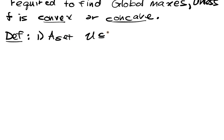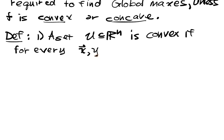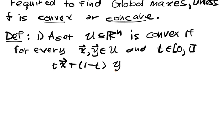So a set u subset of R^n is convex if for every pair x and y in your set and every t in [0, 1], t times x plus (1 minus t) y exists in u.